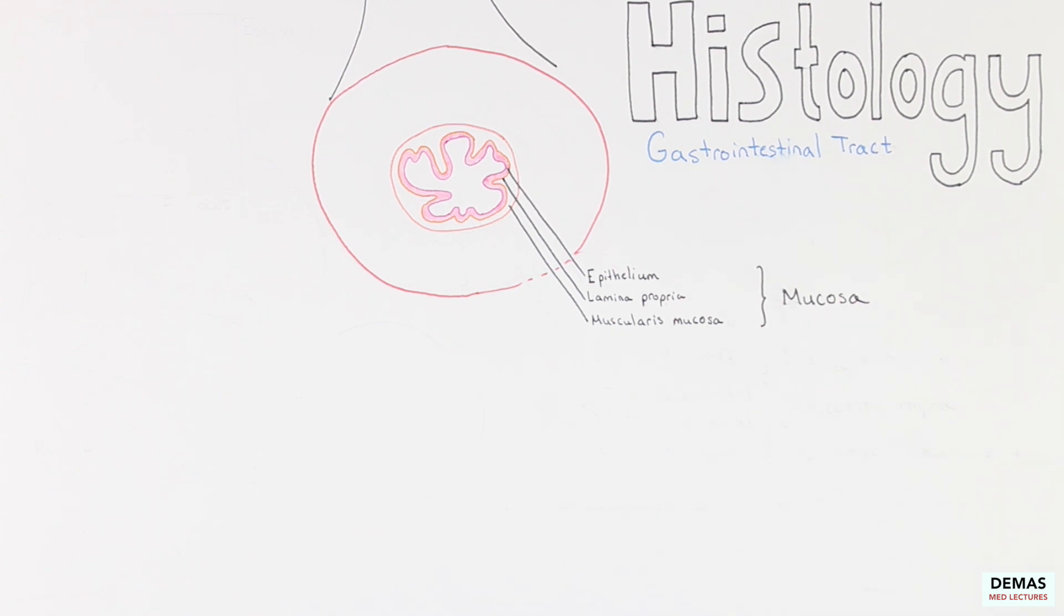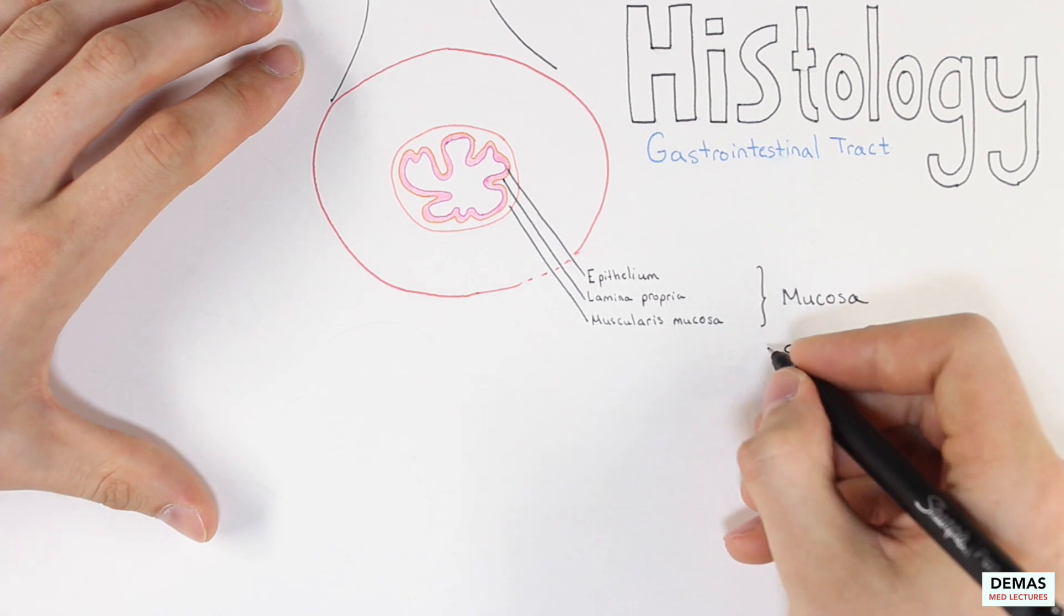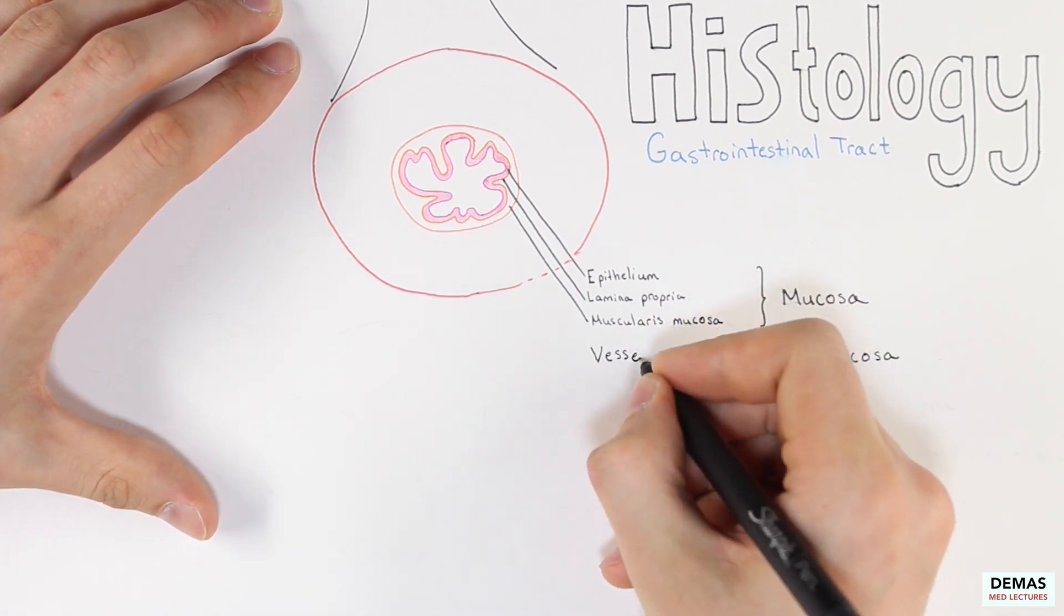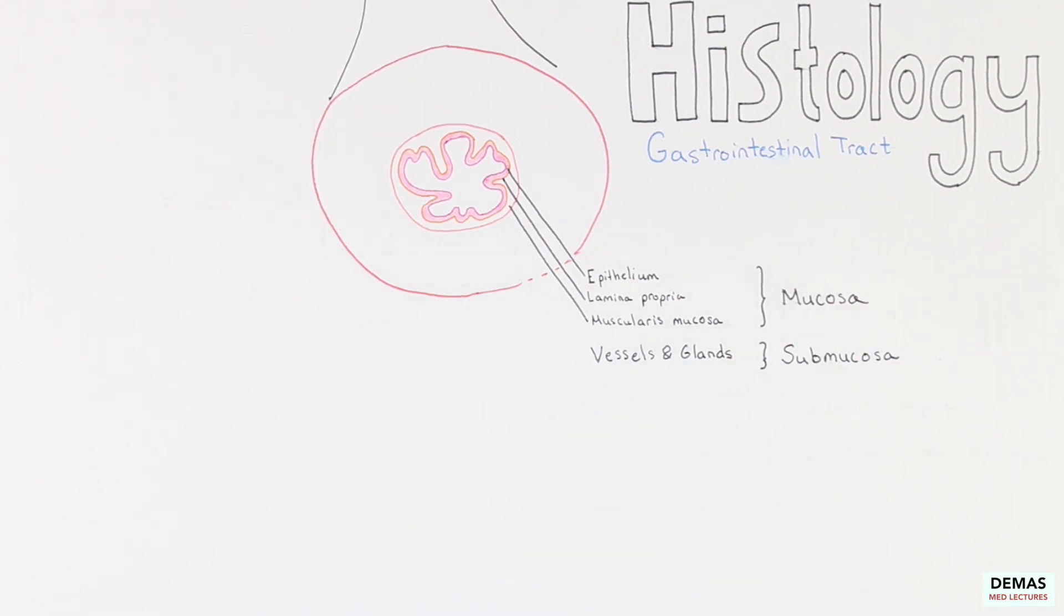The next layer is the submucosa, or the layer just below the mucosa, which is a thicker layer of connective tissue and often contains blood vessels, glands, and the autonomic nerve plexus called the meissner plexus. You can remember this since the meissner plexus is responsible for regulating the glandular secretions and the blood flow in these tissues.